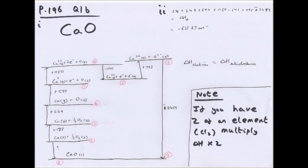Note: if you have two lots of an element — for example, in calcium chloride CaCl₂ — when you atomize the chlorine, you must multiply the enthalpy value by two. You'll see that in the next example.